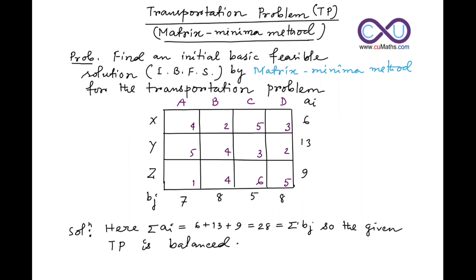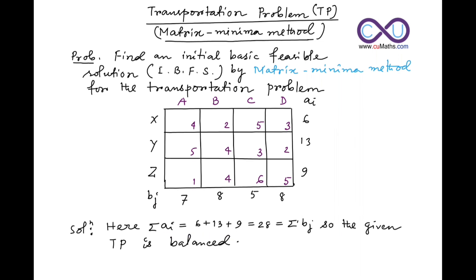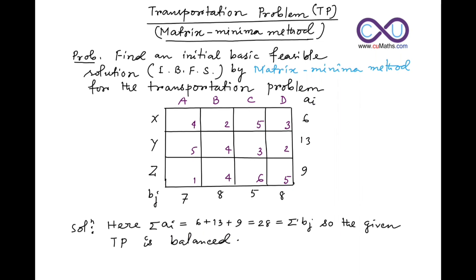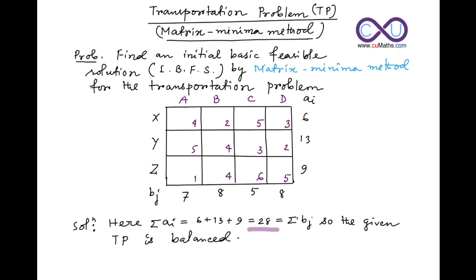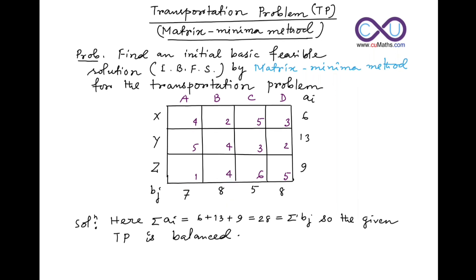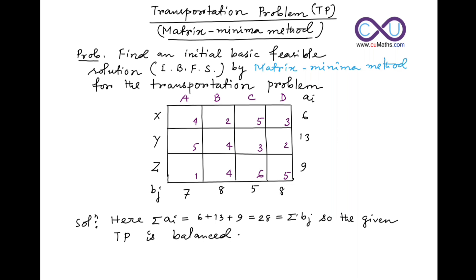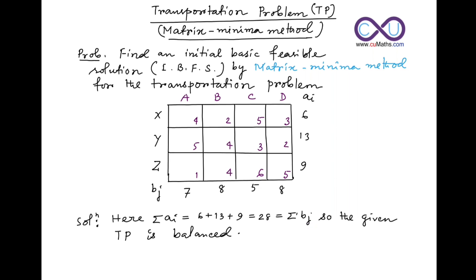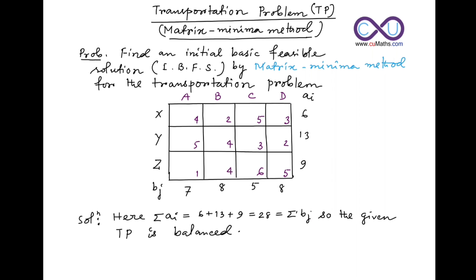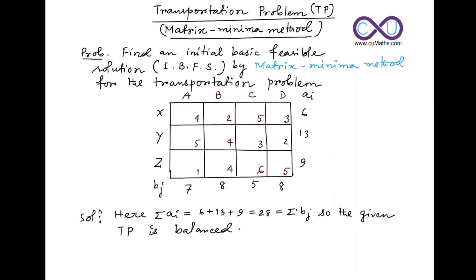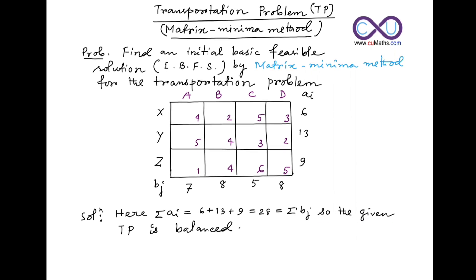Here, summation of ai means sum of the ai elements: 6 plus 13 plus 9, which is 28. Now if we sum all the elements of dj: 7 plus 8 plus 5 plus 8, this is also equal to 28. So summation ai equals summation dj is the necessary condition, meaning the given transportation problem is balanced.